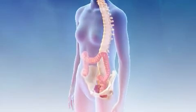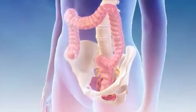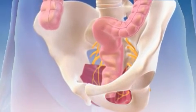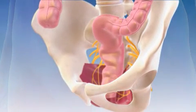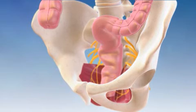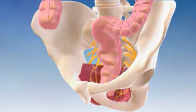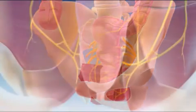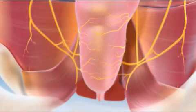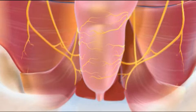Fecal continence depends on complex interactions between anal sphincter function, anorectal sensibility, puborectalis muscle activity, colorectal motility, stool consistency, rectal wall properties, and peripheral and central innervation. The sacral nerves modulate the evacuation reflex, both through inhibition and stimulation.